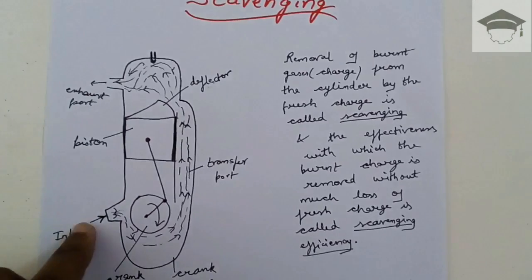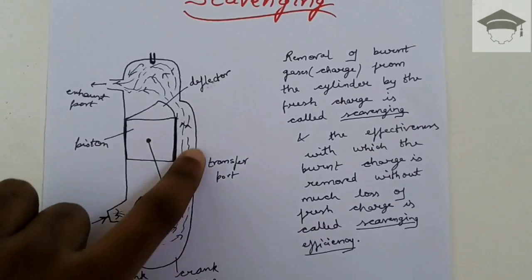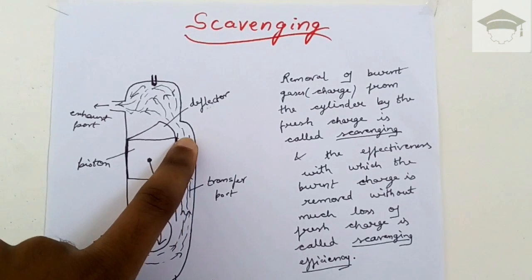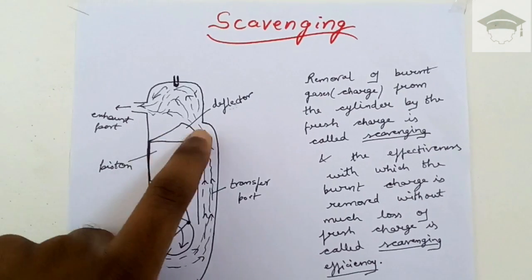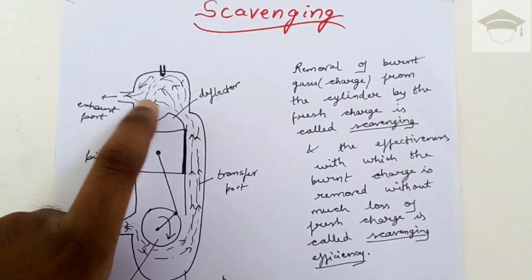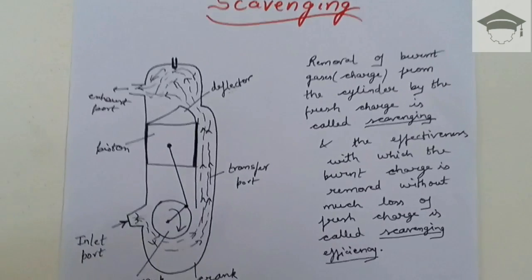It travels through the transfer port and after deflecting from the deflector on the piston, removes the exhaust gases. So this is scavenging. Scavenging efficiency is the effectiveness with which the burnt charge is removed.